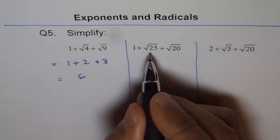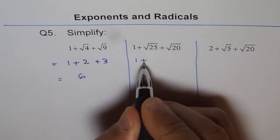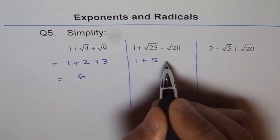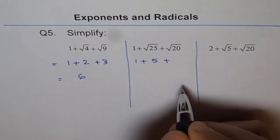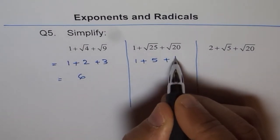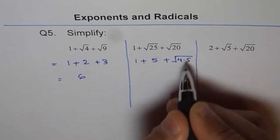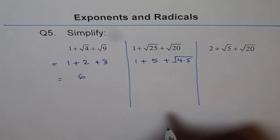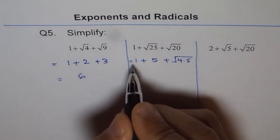Now, here we have 1 plus square root of 25. So 1 plus square root of 25 is 5, and how about square root of 20? Well, 20 could be written as 4 times 5, where 4 is the perfect square of 2. So let's simplify this further.